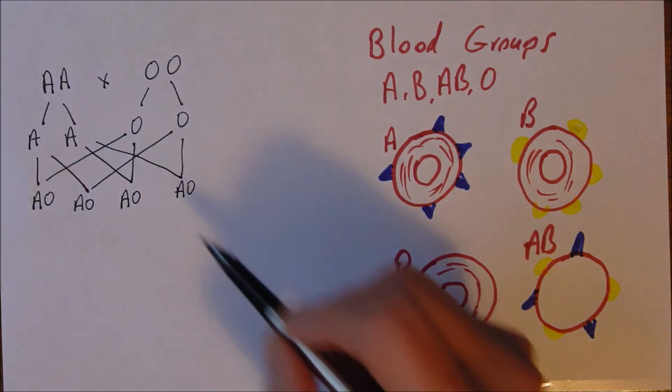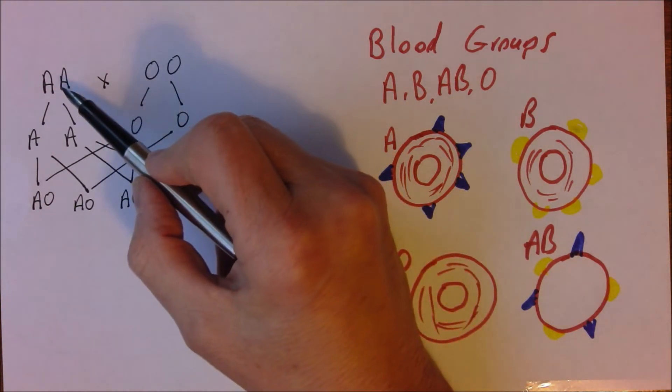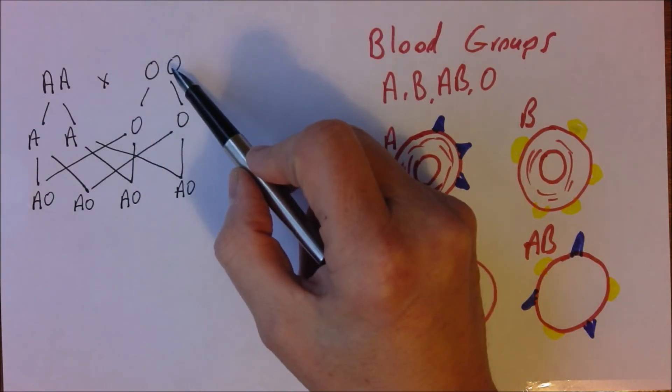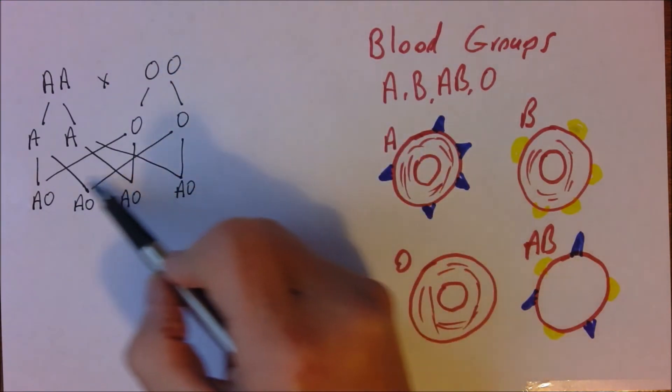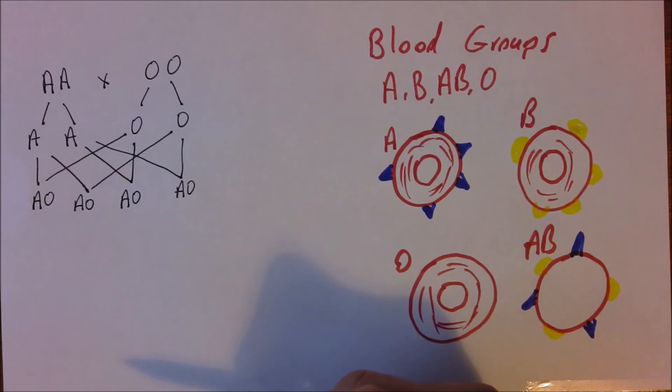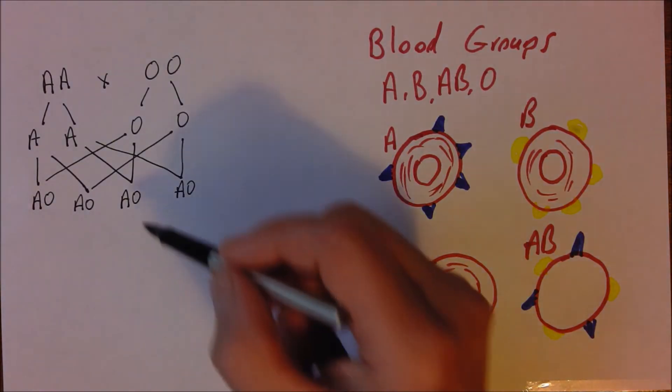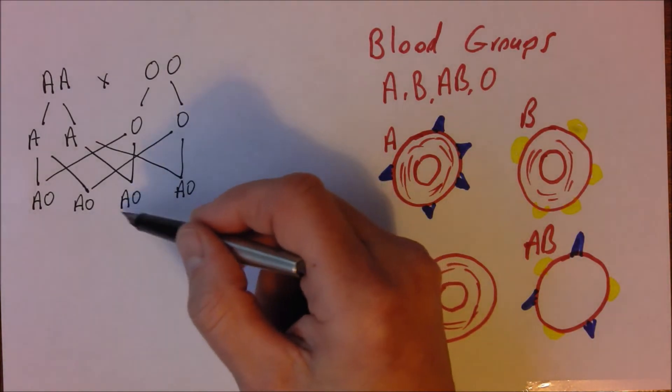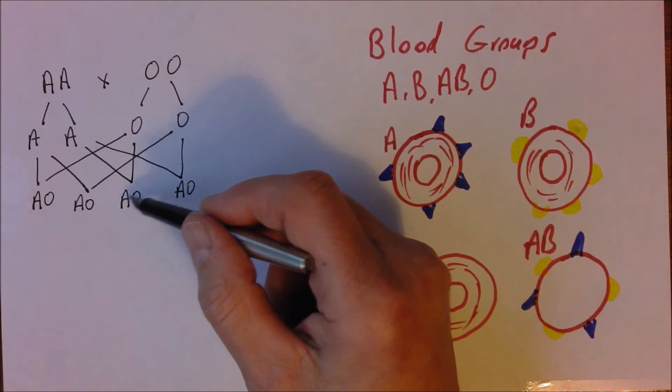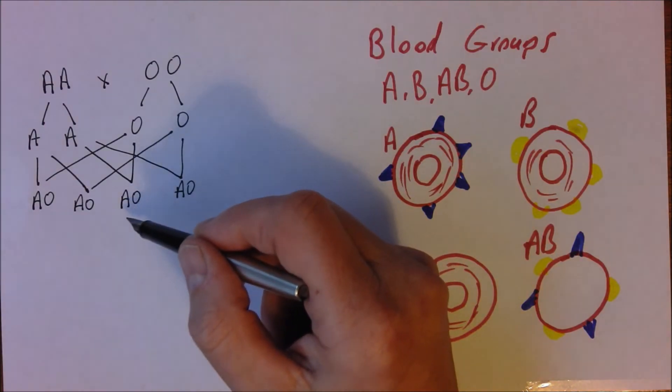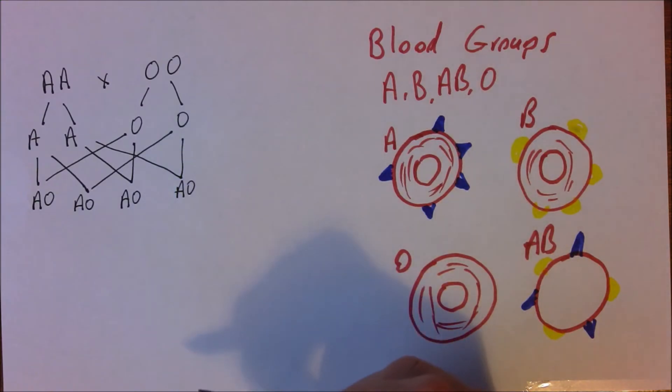So we start off with a parent who's blood group A and a parent who's blood group O. And in this case all of the possible offspring would be blood group A. But of course they're all heterozygous for the allele. They're AO. So they could potentially carry the O blood group on to the next generation.